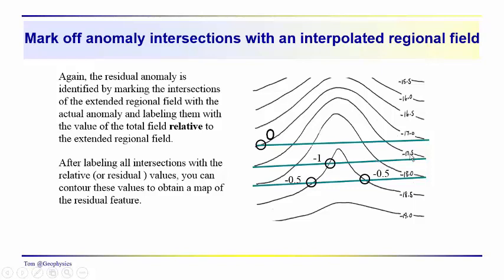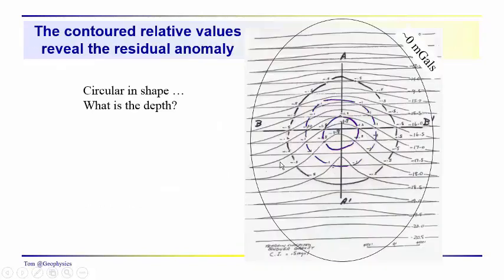In this case we've got a minus 17.5 contour line, regional contour line that goes through the area. Minus 18 is minus 0.5 relative to 17.5. Minus 18.5 is minus 0.5 relative to 18. So we just label all the intersection points and then we contour it.